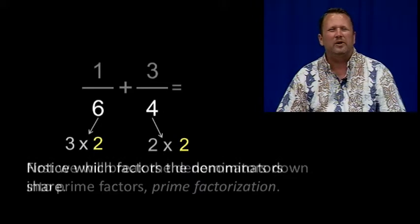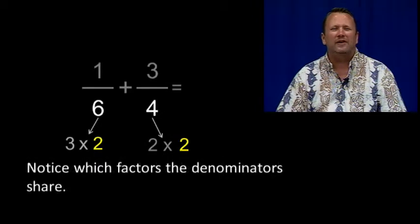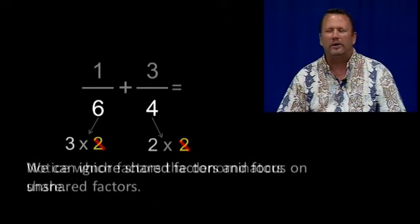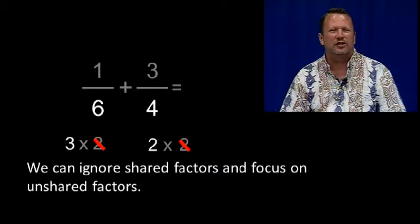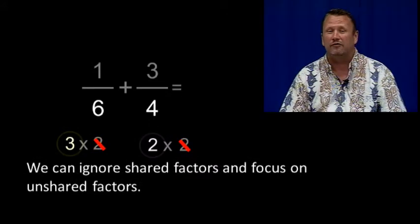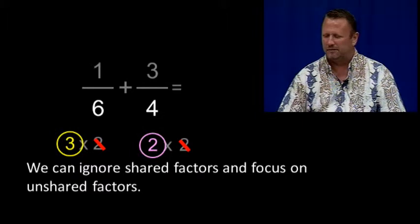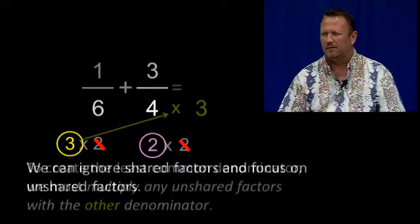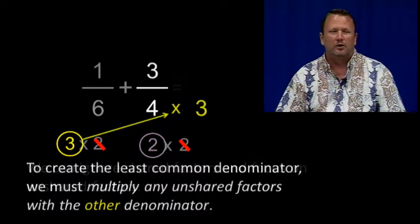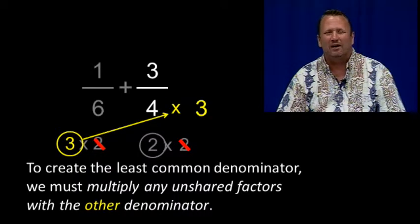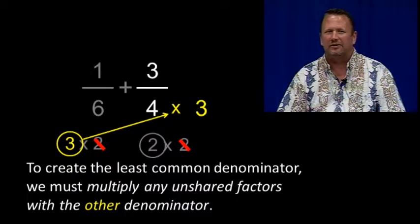First, we notice which factors the denominators share, and we can ignore those shared factors and focus on unshared factors. To create the least common denominator, we must multiply any unshared factors with the other denominator.